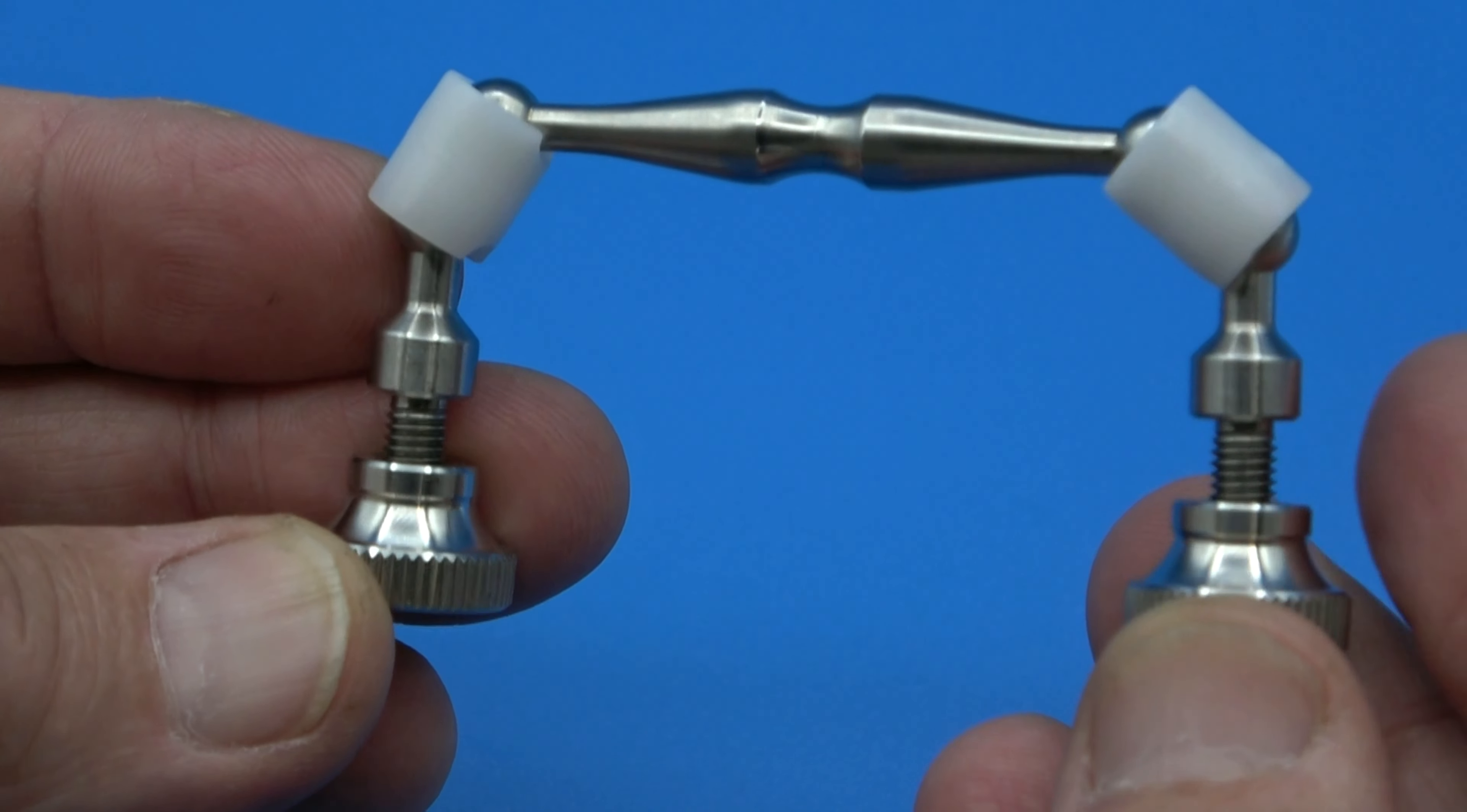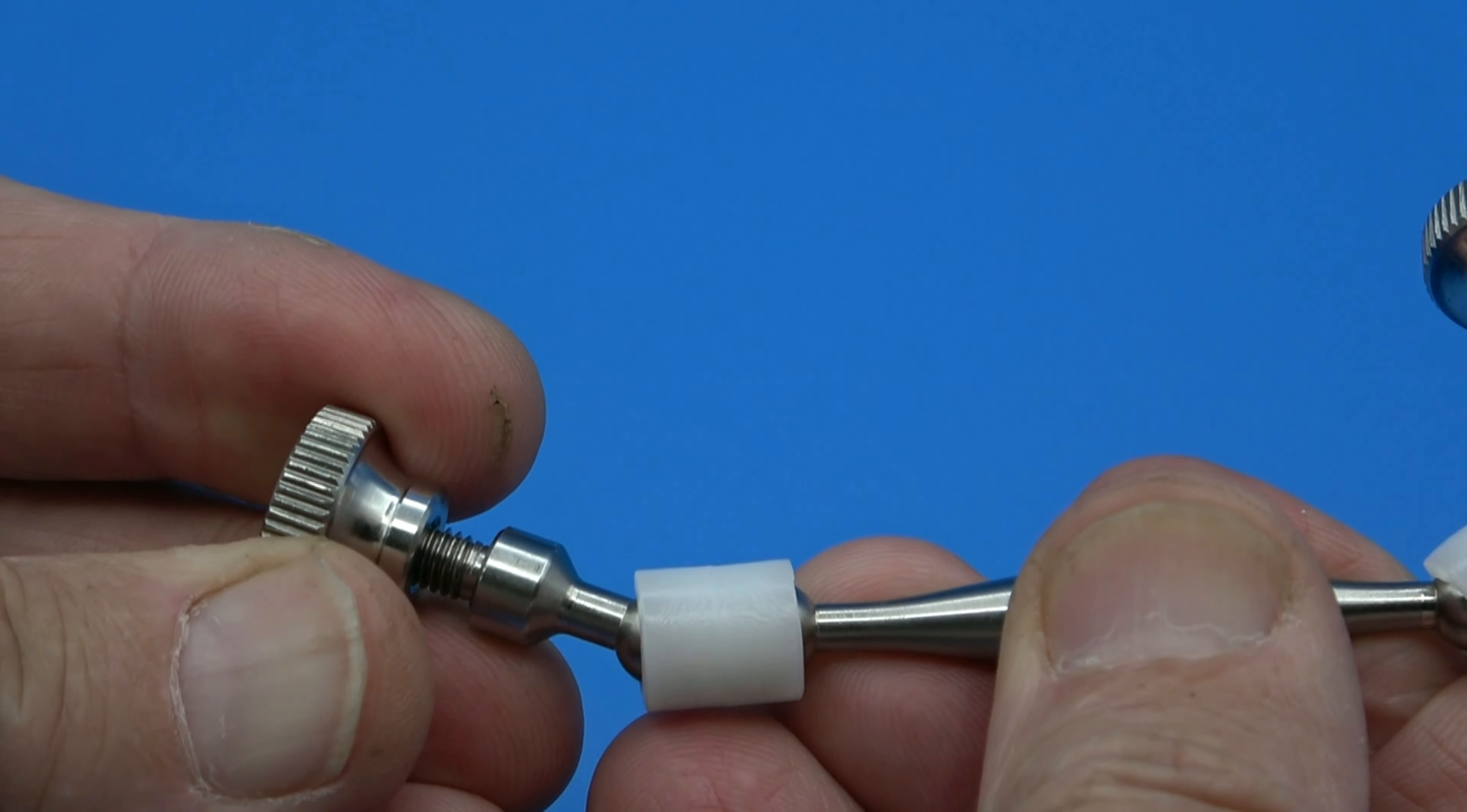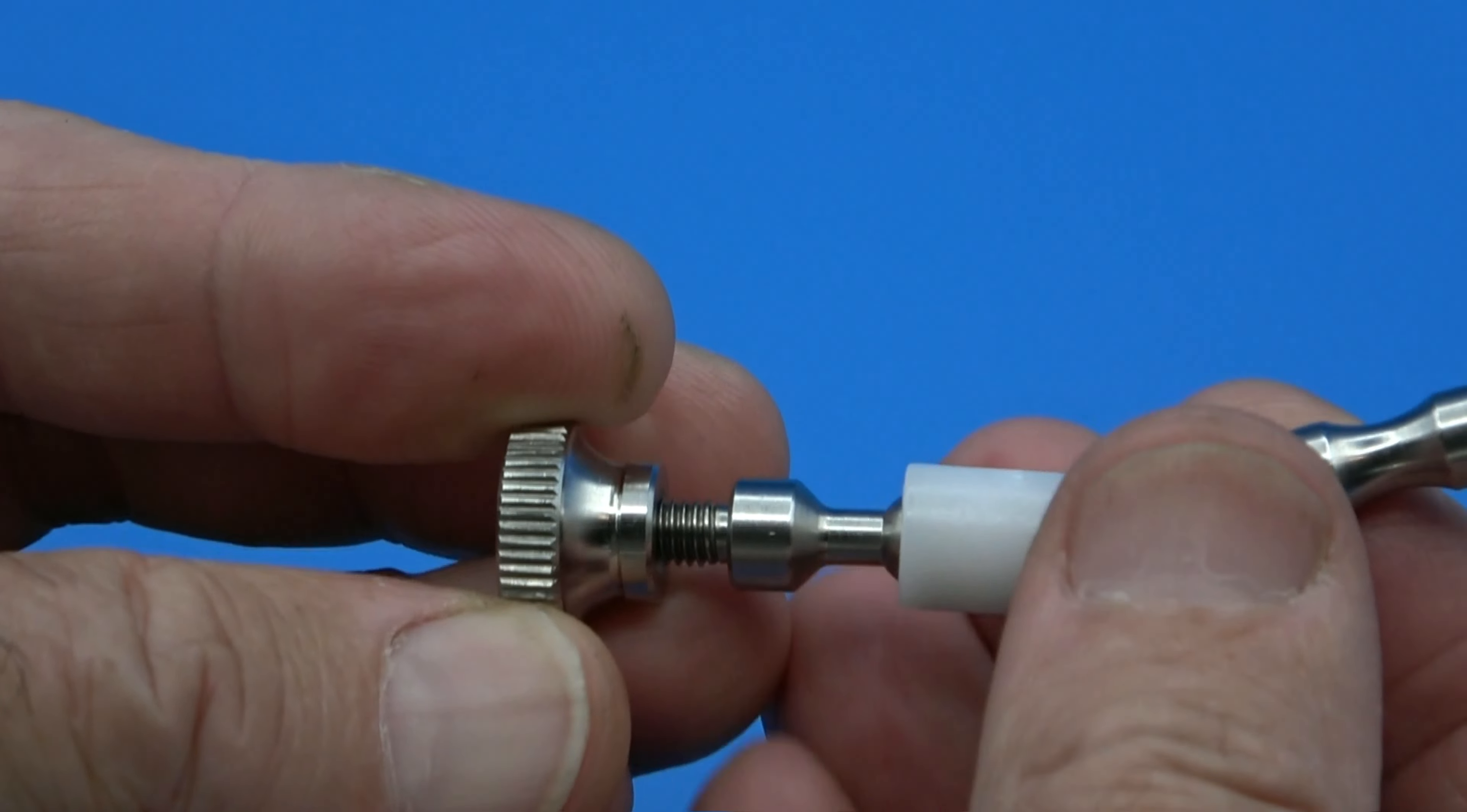This is the friction positioning arm. This is five beautifully machined stainless steel parts.